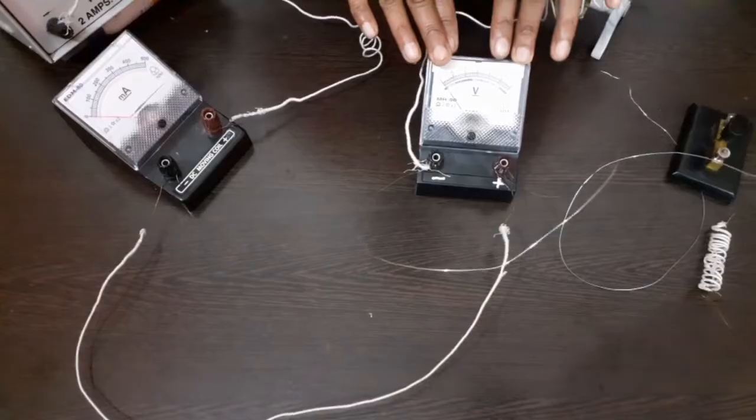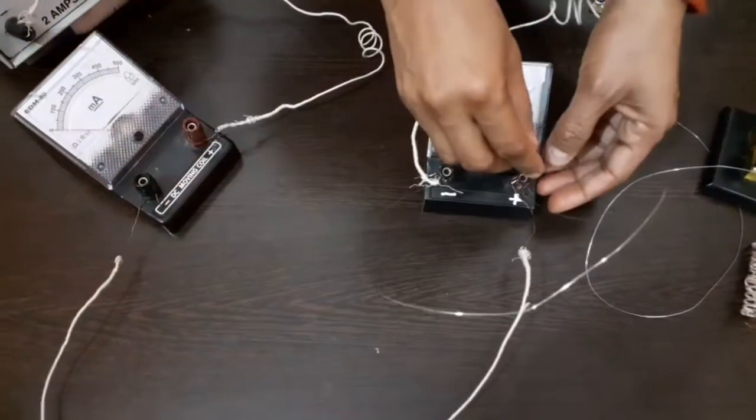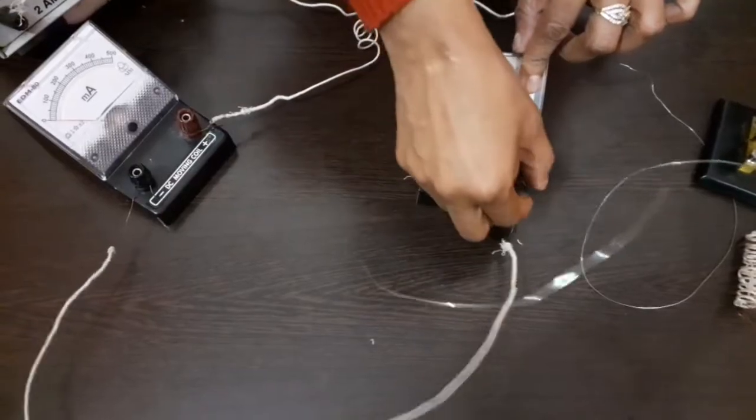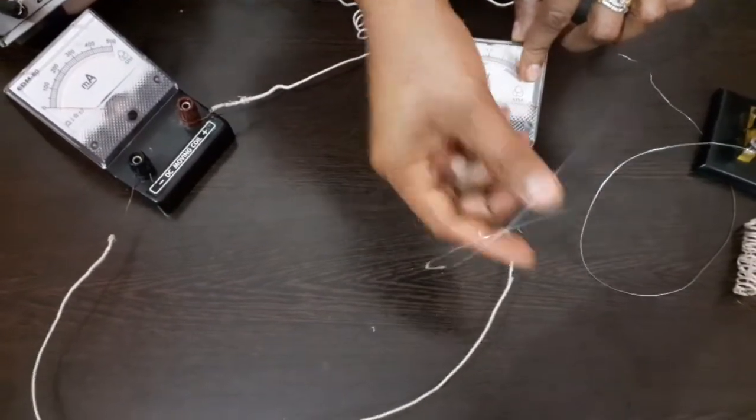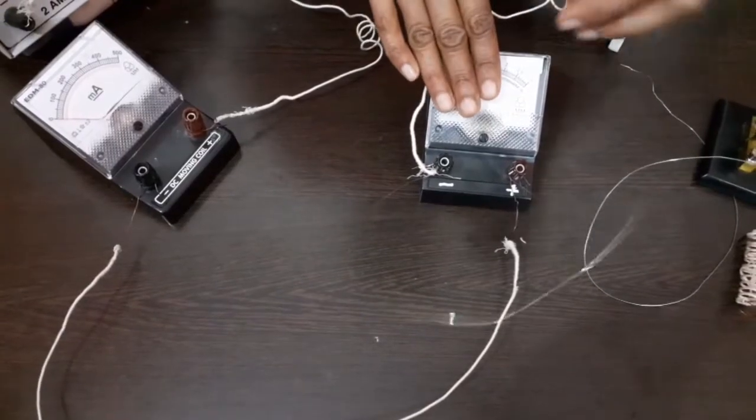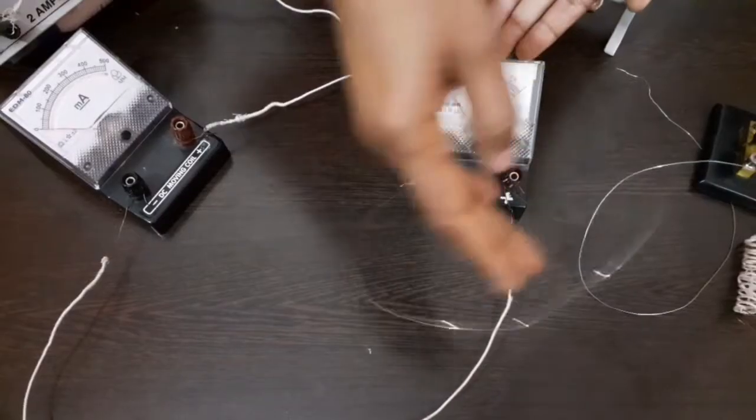Voltmeter has a higher resistance. Why? Because current from here will reach to here. Now this current has two choices to go. Either it can go through this resistance wire or it can go through this voltmeter. If the voltmeter has a lower resistance, the current will pass through the voltmeter. It will not go through this wire.